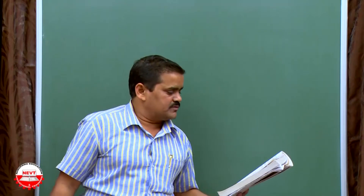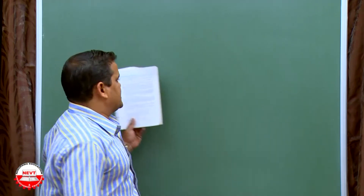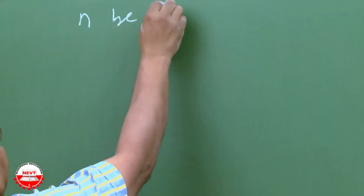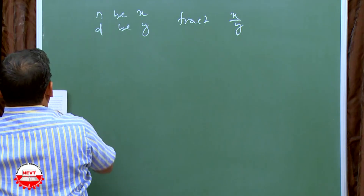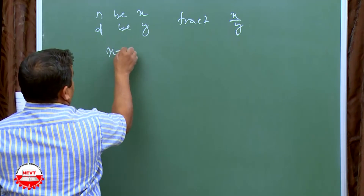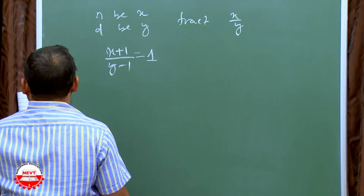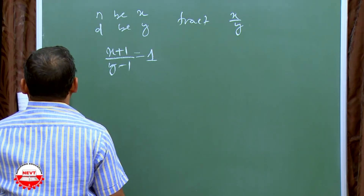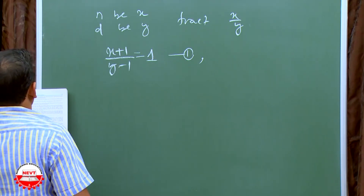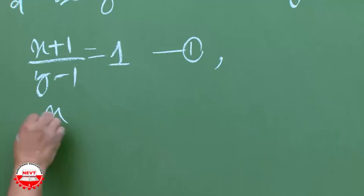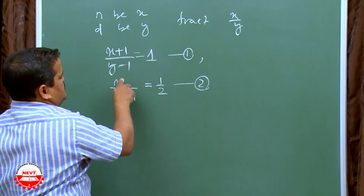Question 2, first part: if we add 1 to the numerator and subtract 1 from the denominator, a fraction reduces to 1. Let the numerator be X and denominator be Y, so the fraction is X by Y. Then (X plus 1) by (Y minus 1) equals 1. It also becomes 1 by 2 if we only add 1 to the denominator: X by (Y plus 1) equals 1 by 2 (equation 2). Cross-multiply both and solve.